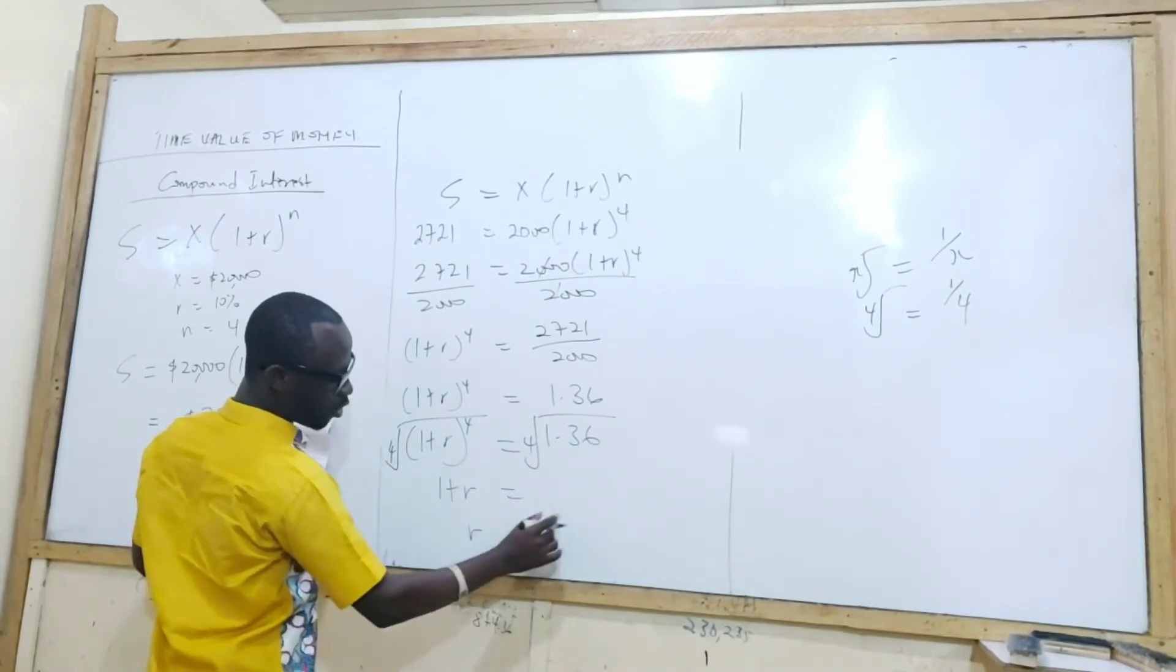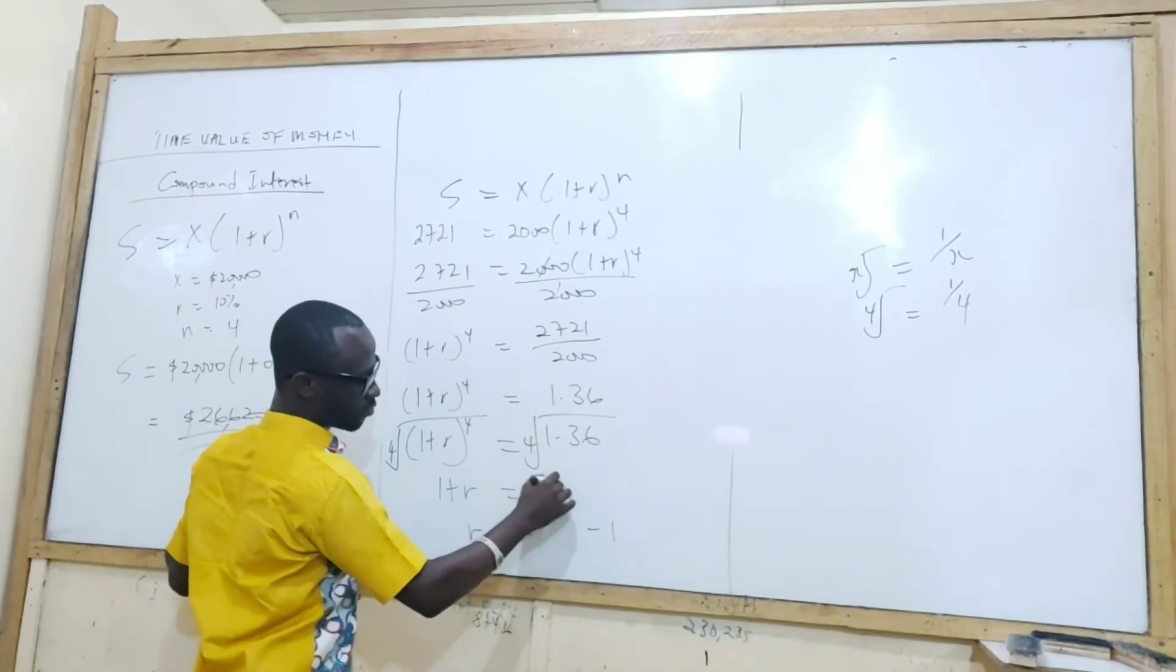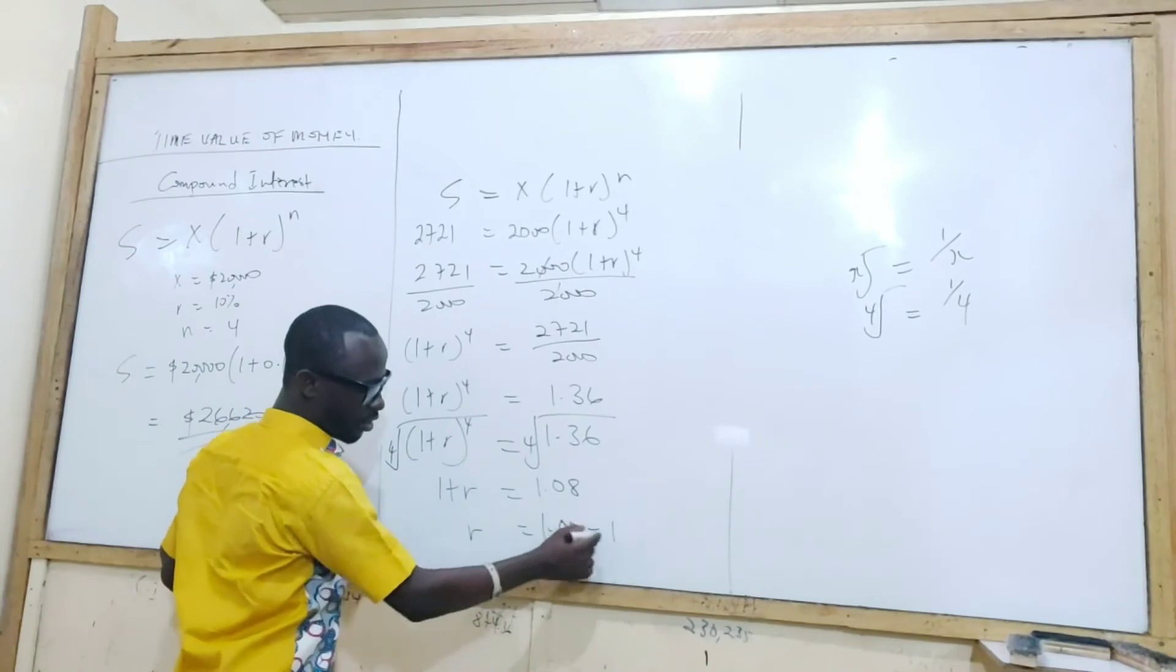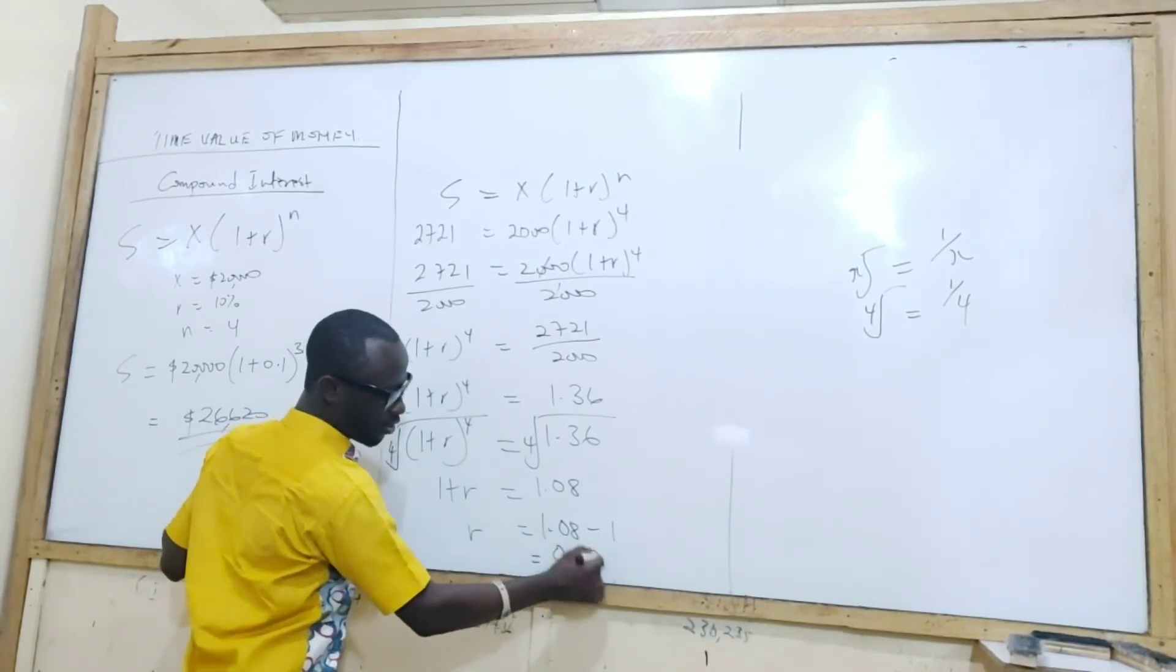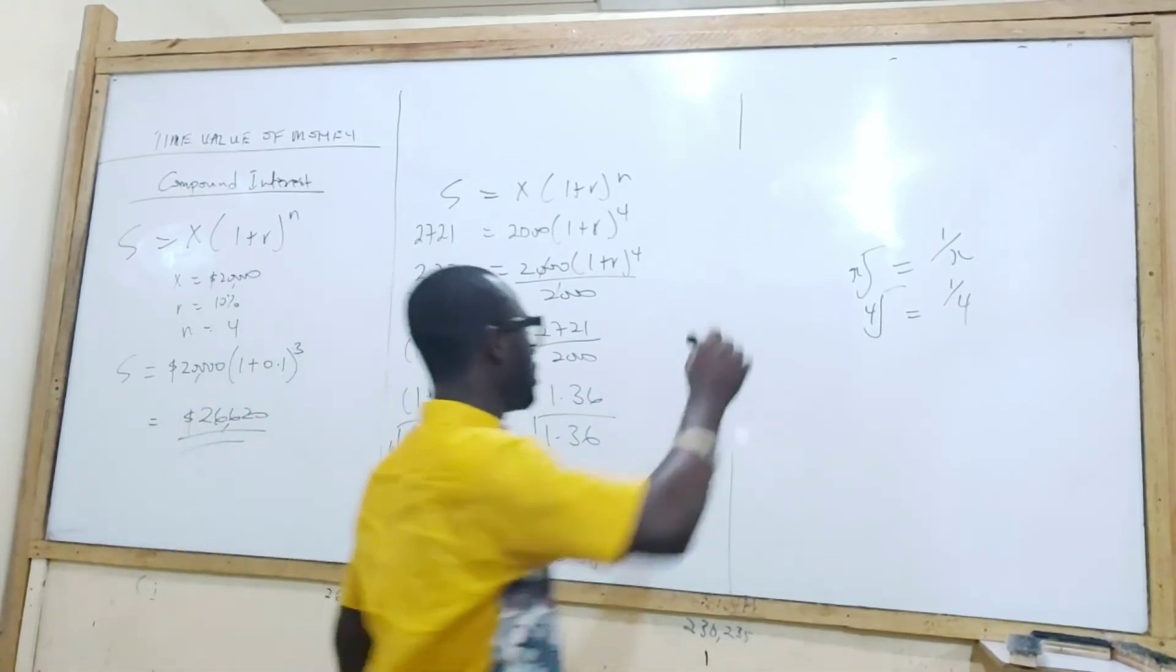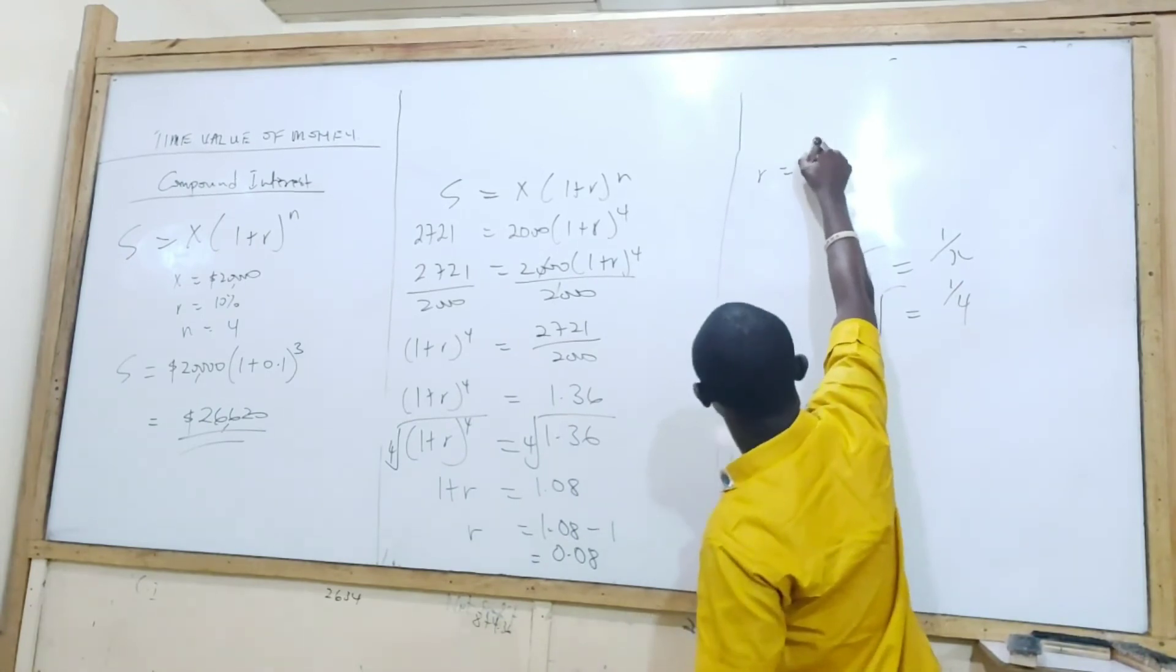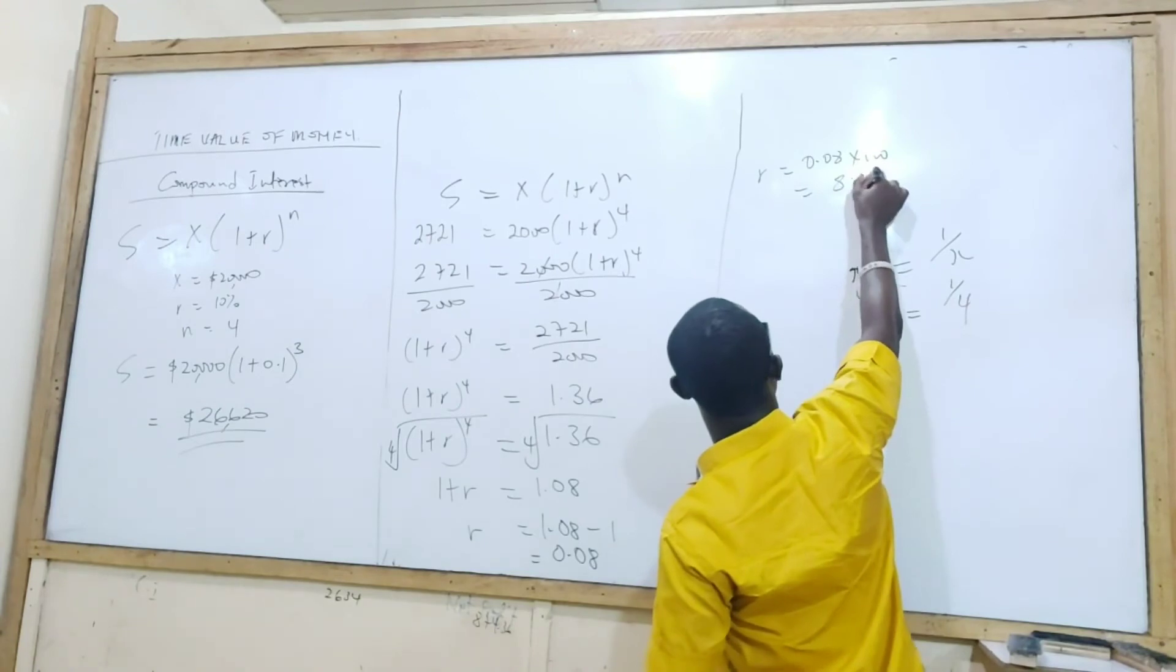So that r will equal to that thing minus one. 1.08. So that now 1.08 minus one. You get what? 0.08 times 100%. Then you can now get your rate. 0.08 times 100, and that will be 8% I guess.